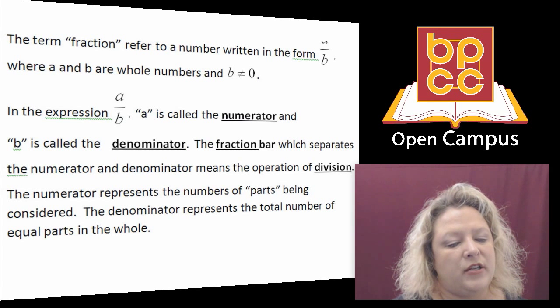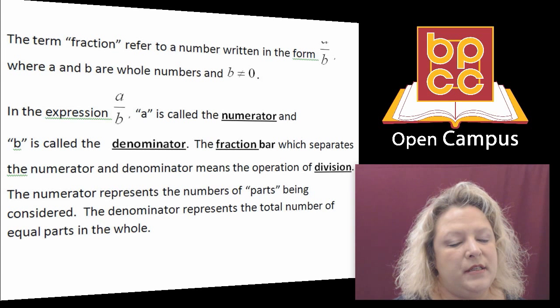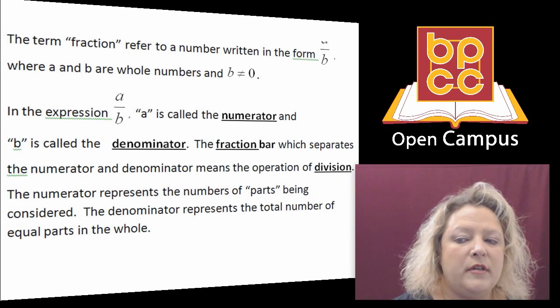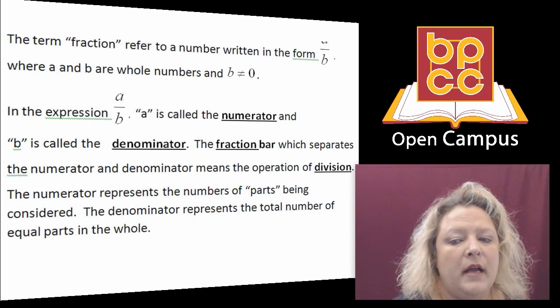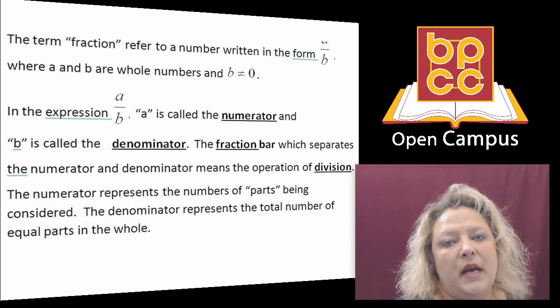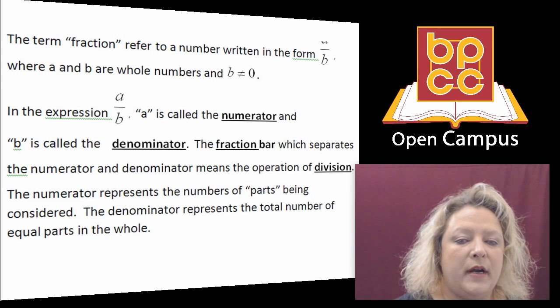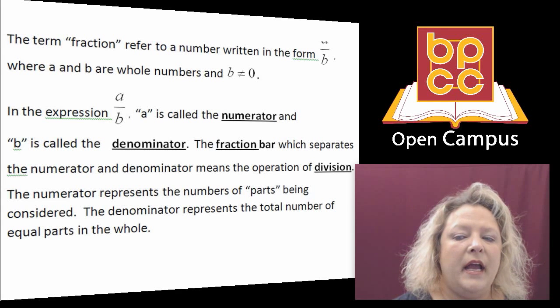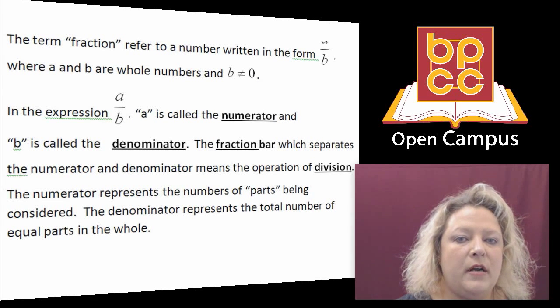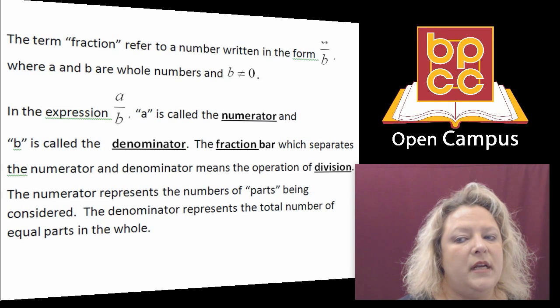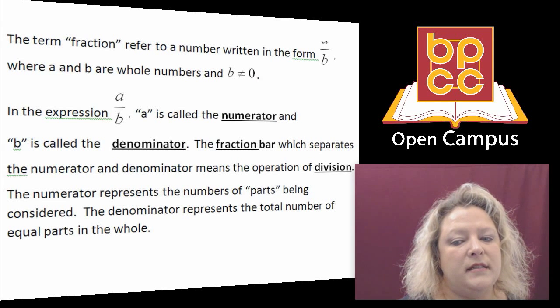When you have a fraction, there are two things that you need to know. Number one, the top number is called the numerator and the bottom number is called the denominator. The bar that separates them is called the fraction bar and you need to know that the denominator cannot be equal to zero. It must always be a number that is bigger than zero.